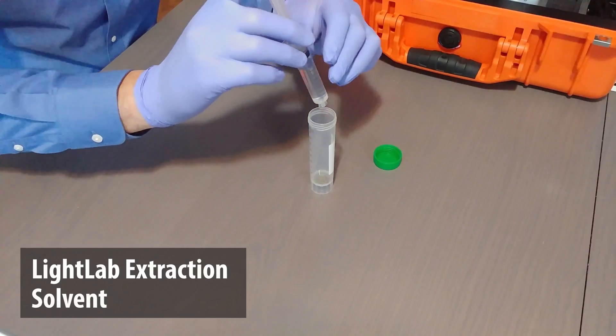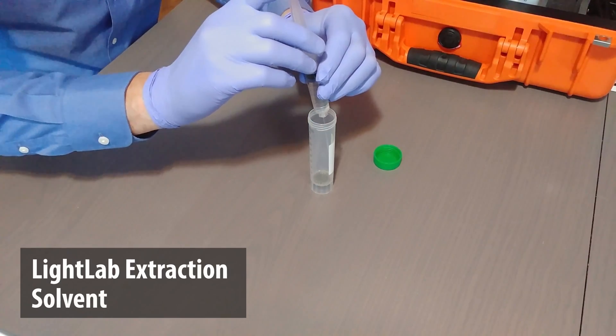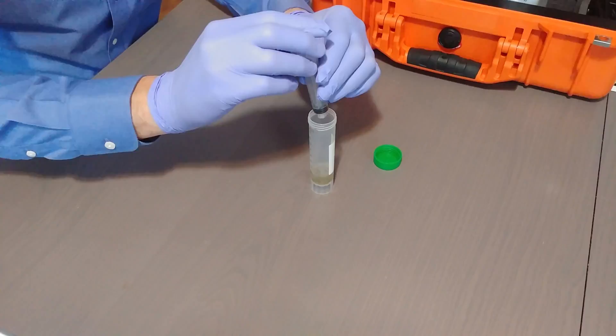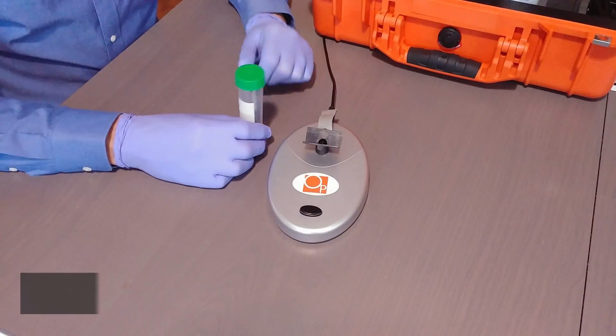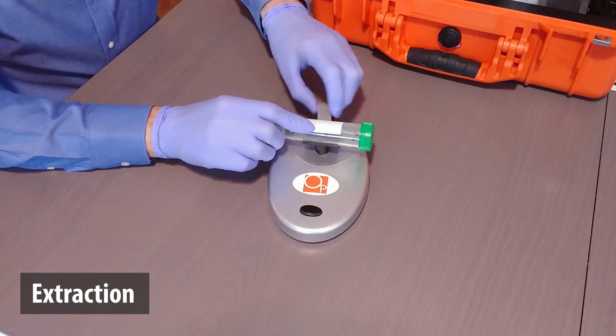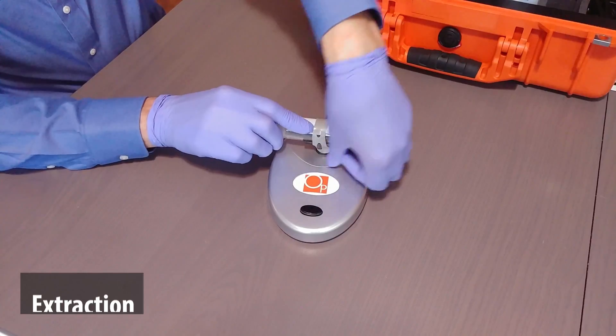Next we add LightLab extraction solvent. Then we mount the vial onto the LightLab shaker and turn it on.